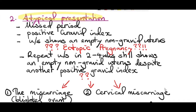Scenario number two is the atypical presentation. You have a missed period and a positive pregnancy test, but ultrasound shows an empty non-gravid uterus. Remember that in a blighted ovum, ultrasound should show you a gestational sac but with no embryo.